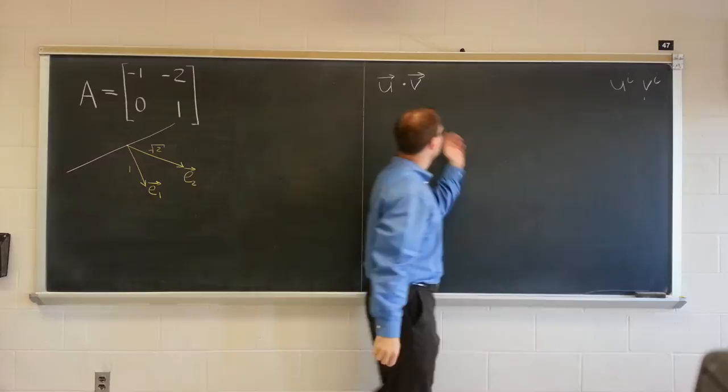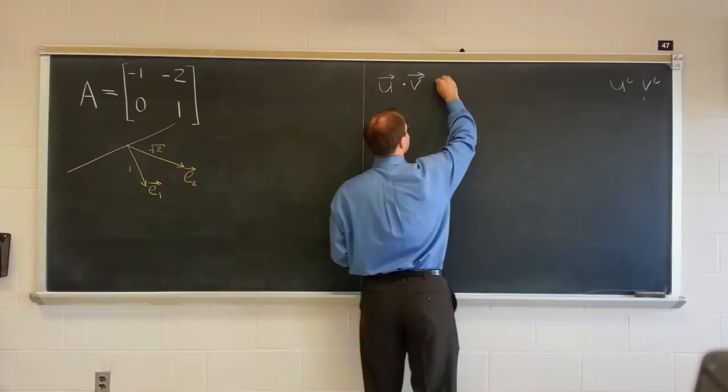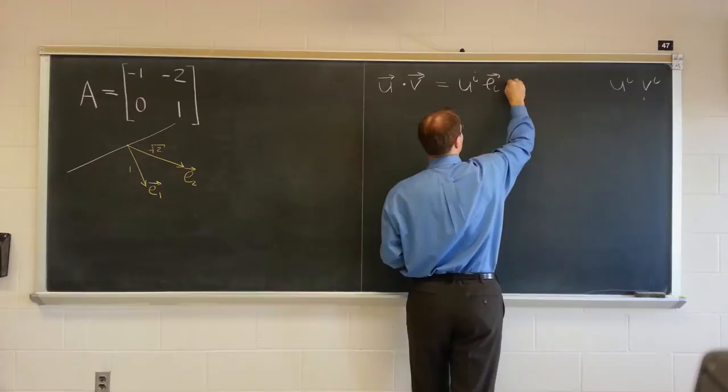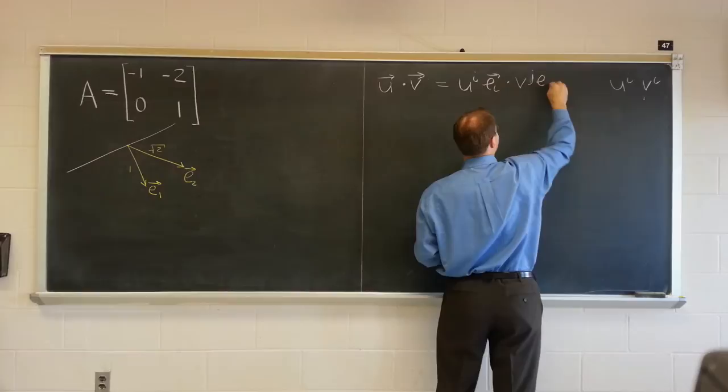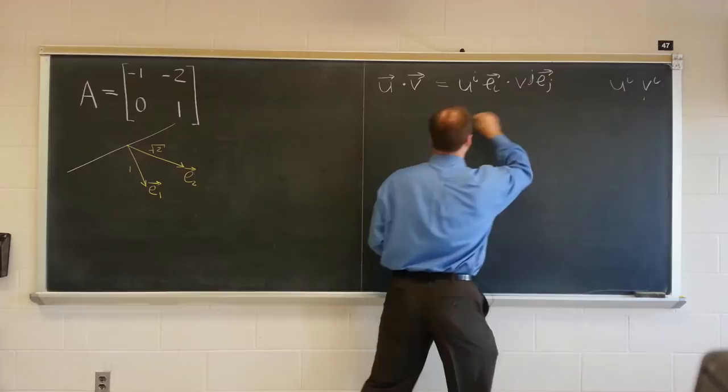how do you determine u dot v by manipulating components? And of course it's very easy because u can be written as ui ei and we're dotting it with vj ej.